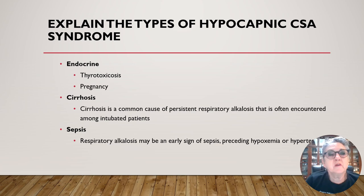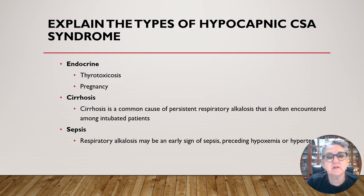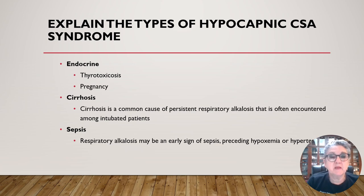Endocrine system causes include thyroid toxicity, pregnancy, and psoriasis. Psoriasis is commonly associated with persistent respiratory alkalosis, often encountered among intubated patients and in sepsis. Respiratory alkalosis may be an early sign of sepsis, preceding hypoxemia or hypotension.